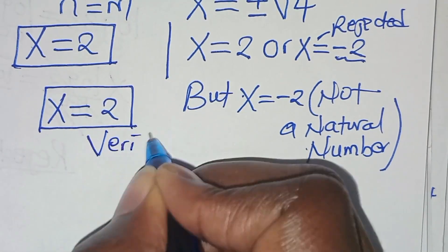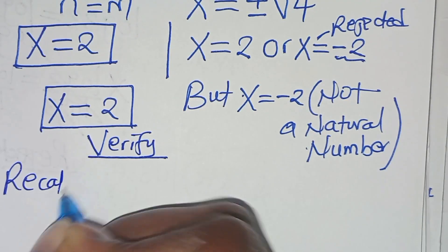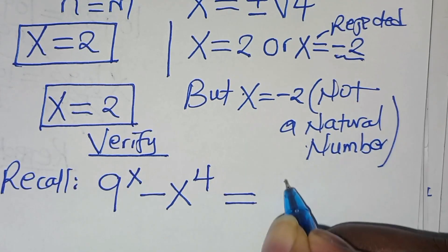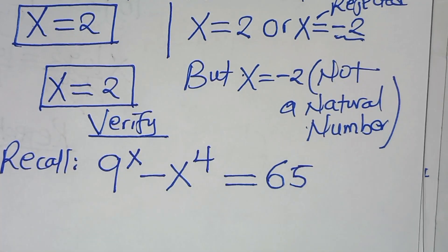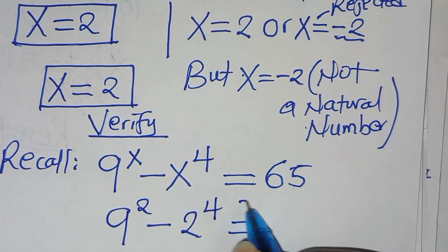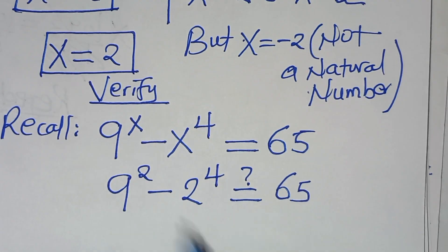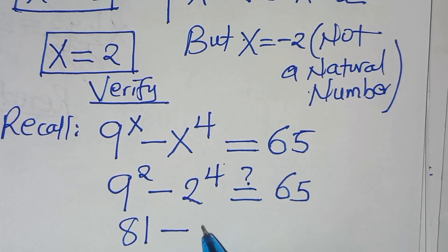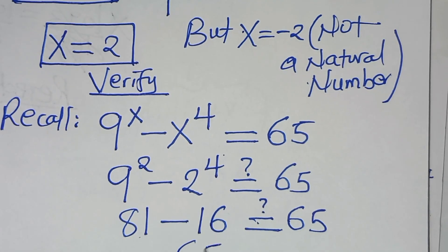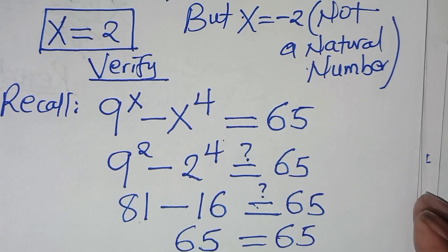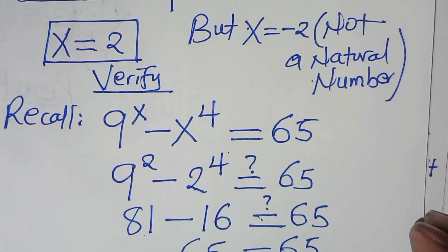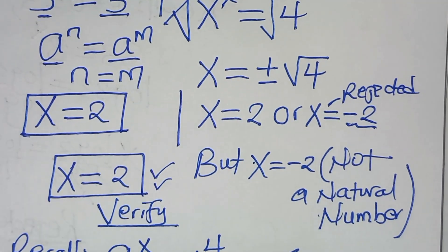Let's verify. Recalling that we have 9 to the power of x minus x to the power of 4, this should give us 65. Substituting x equals 2, we have 9 to the power of 2 minus 2 to the power of 4. This gives 81 minus 16. This is supposed to give us 65. And indeed, the left-hand side equals the right-hand side, confirming that x equals 2 satisfies the equation.